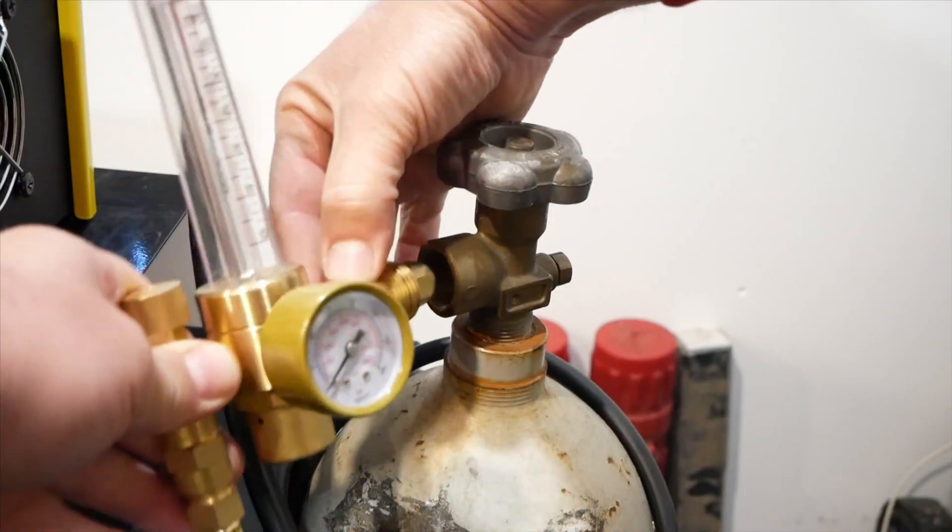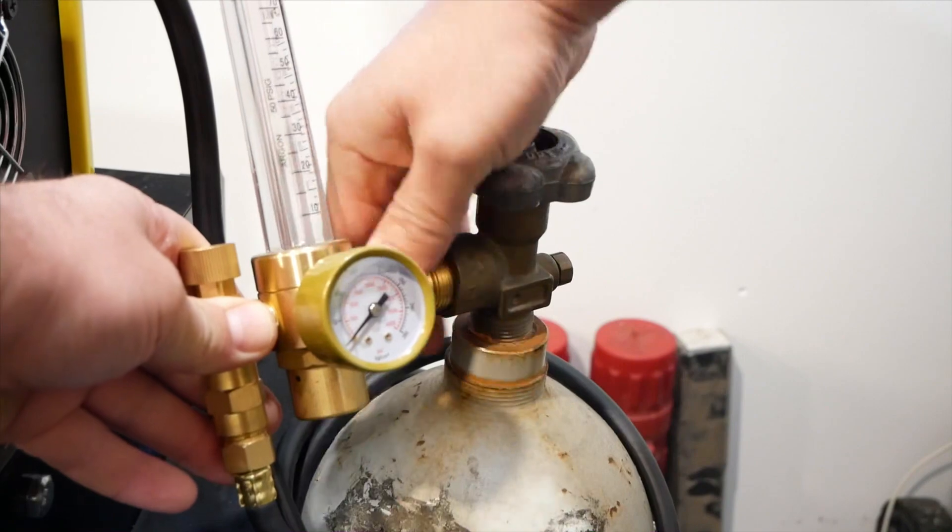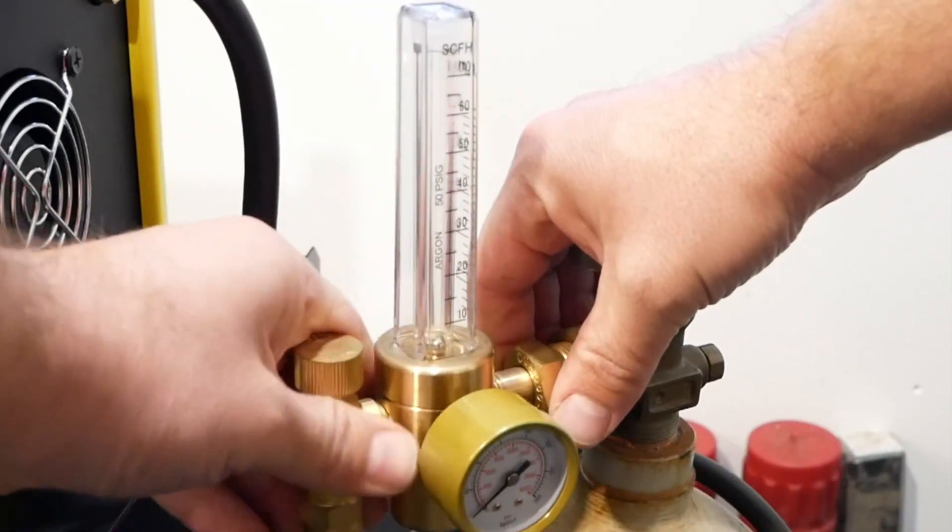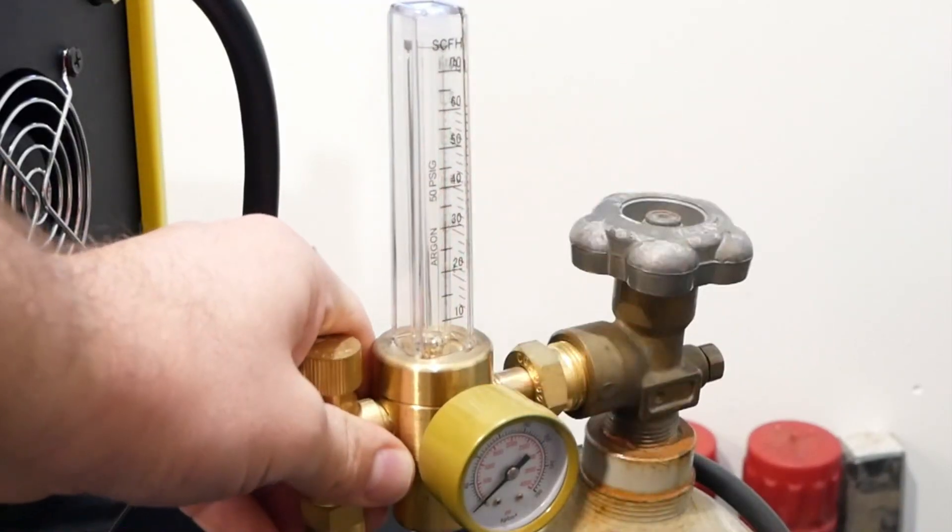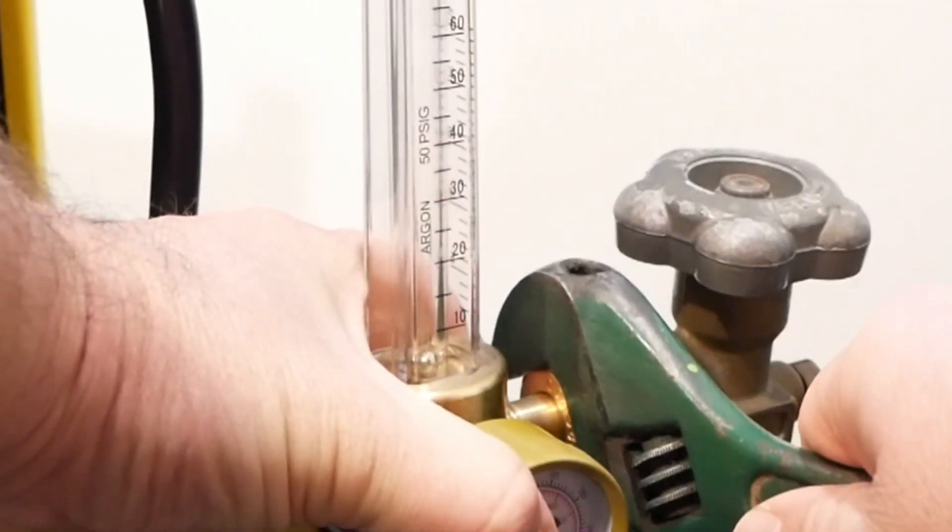Proceed by installing the flow meter to your mixed gas or argon cylinder. Be sure that the flow meter is in the vertical position. This is important for accuracy of gas flow measurement with the ball. Tighten the fitting down for the flow meter using a wrench.